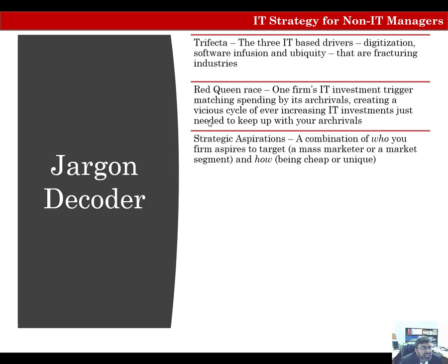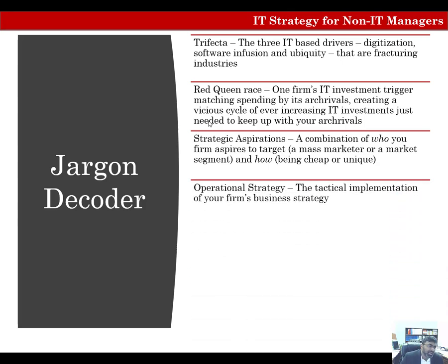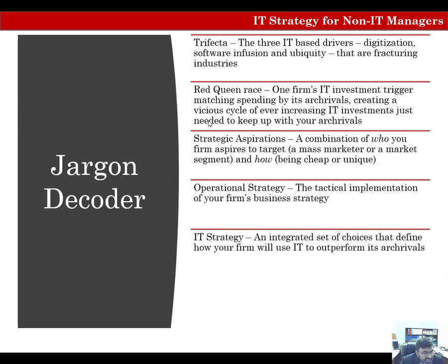Strategic aspirations come from your strategic plan — a combination of who your firm aspires to target and how. Operational strategy is a tactical implementation of your firm's business strategy. IT strategy is a set of choices that define how your firm will use IT to outperform its rivals. Your IT strategy must synchronize with your strategic aspirations — that's what we'll talk about in this chapter.